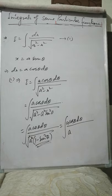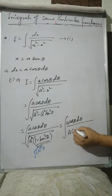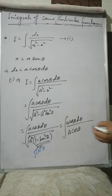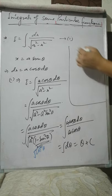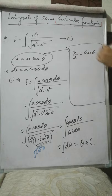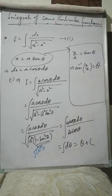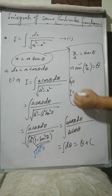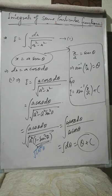Since 1 minus sin squared θ equals cos squared θ, the square root gives cos θ, so a cos θ cancels with the denominator, leaving the integral of dθ, which equals θ plus C. Now, since x equals a sin θ implies x over a equals sin θ, taking sin inverse of both sides gives θ equals sin inverse(x/a). Therefore the result is sin inverse(x/a) plus C.